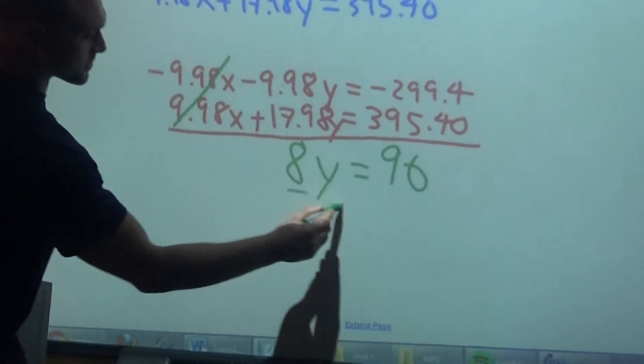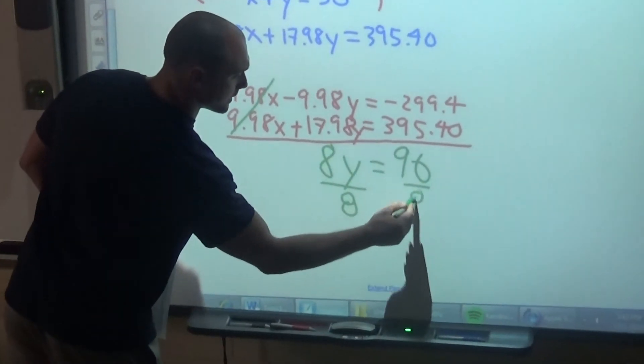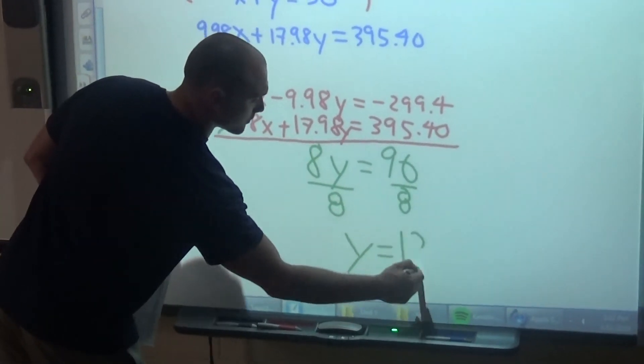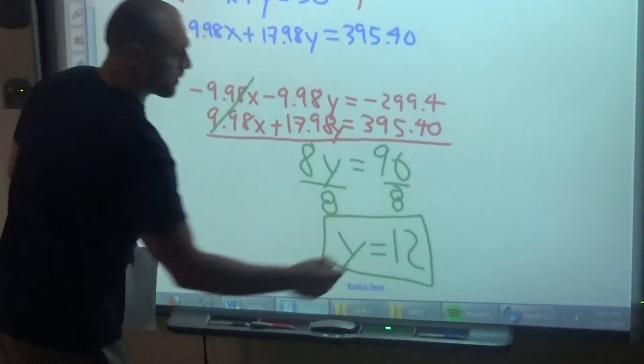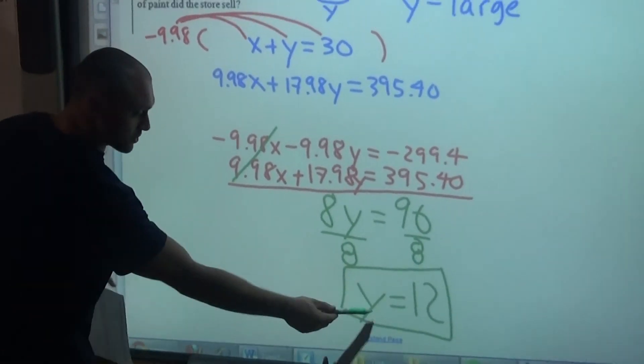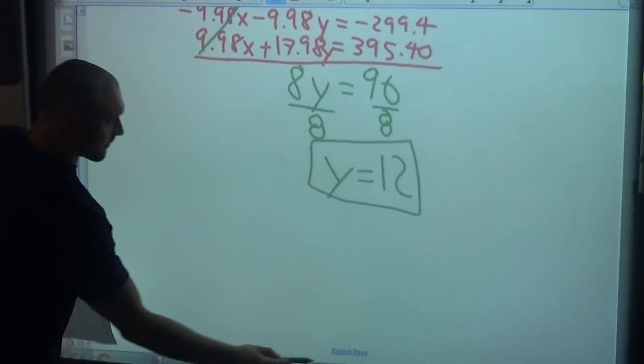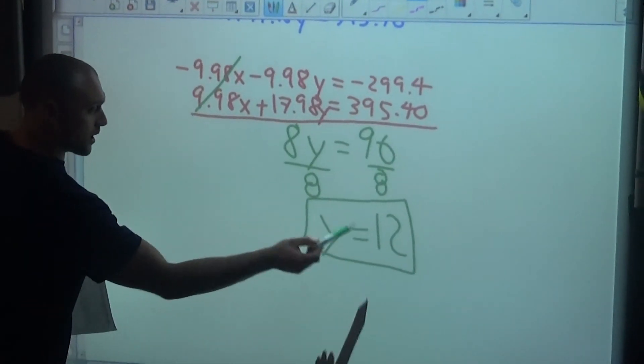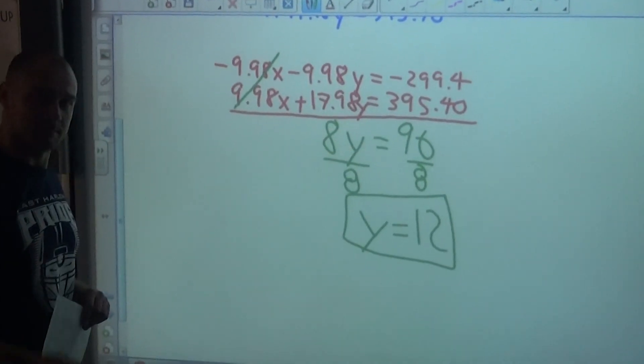So now I can just divide both sides by $8, and I get y equals 12. We're only asked to solve for large cans of paint. So our final answer would be 12 large cans of paint. Nice job.